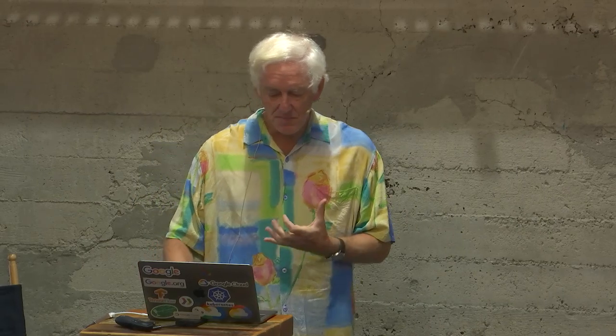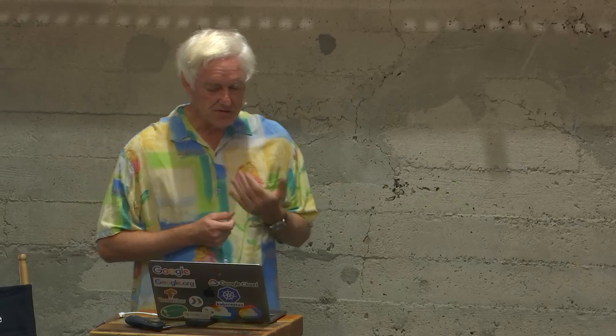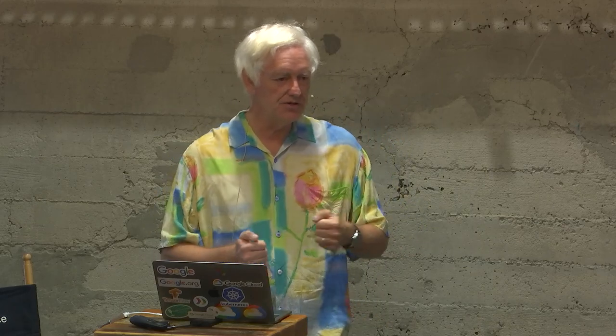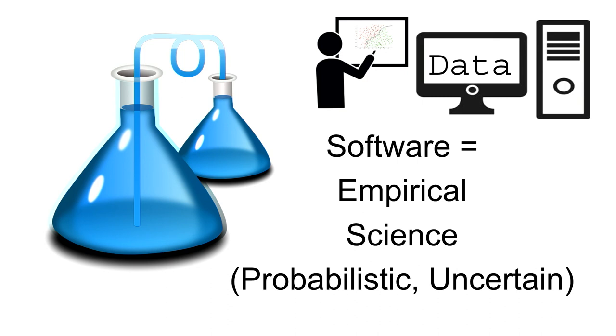Machine learning is quite different. It's not the programmer writing the program — it's the computer writing the program. The human's place is to be a teacher, loading in data and teaching the system how to learn. That makes machine learning an empirical science — more like doing biology than doing math. You make theories, test them, they're never perfectly precise, they're probabilistic. You embrace uncertainty rather than eliminate it. It's a completely different mindset and can be hard for people to get used to.